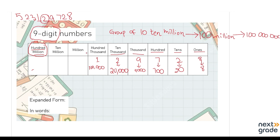At the millions place we have 3, so that is 3,000,000. Remember, a million has 6 zeros. So we write it in that form. Next, we have the digit 2 at the 10,000,000 place value, and that becomes 20,000,000.